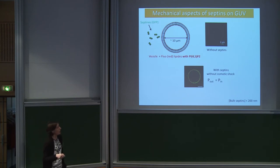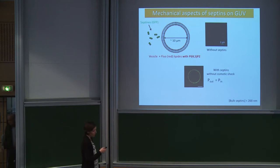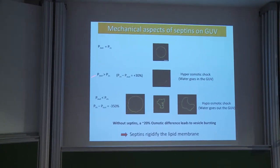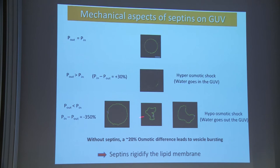In the absence of septins, as you can see in this confocal microscopy section, the vesicles are completely spherical. When we add the septins, you see a yellow signal, meaning green plus red. If we make an osmotic shock on the vesicle — a hyperosmotic shock where water goes out — usually a 20% difference causes the vesicle to burst. But in the presence of septins, vesicles are able to resist very high shocks: here you can see they resist a shock of 350%, which is really huge. So we found that septins rigidify the lipid membrane.